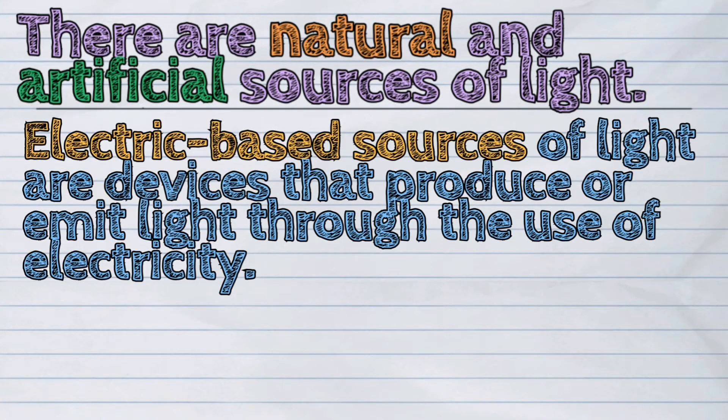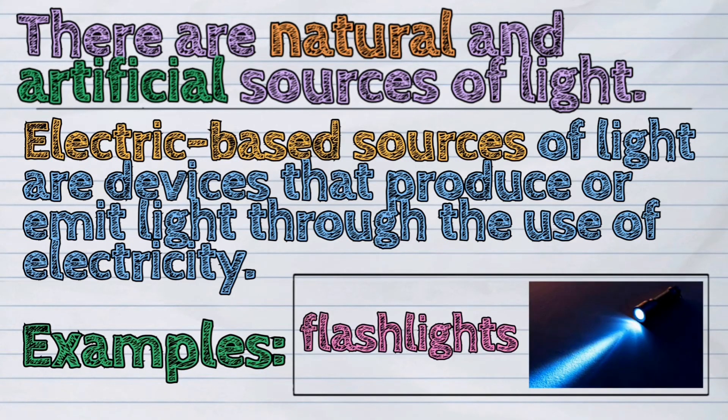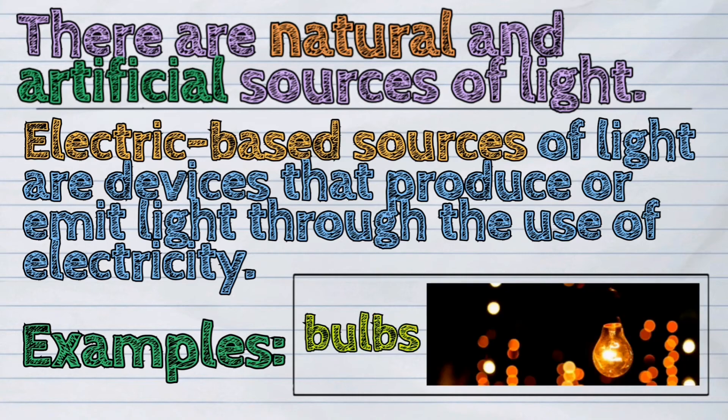Electric-based sources of light are devices that produce or emit light through the use of electricity. Examples of this are flashlights and light bulbs.